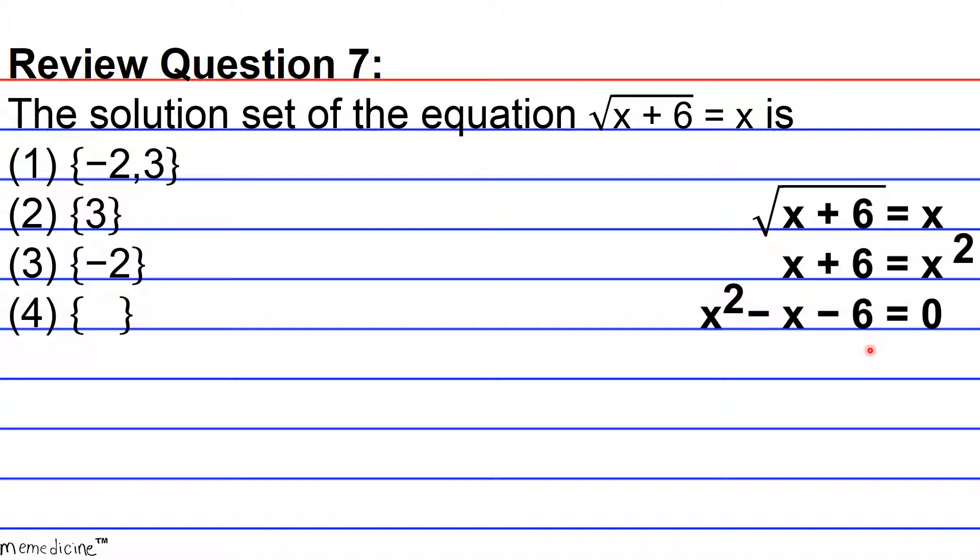So now we're going to do the reverse FOIL method and factor this quadratic equation. We need two numbers that when we multiply them yield our C value. I'm guessing 2 and 3 but which one is negative and which one is positive is determined by the coefficient on the B value. The invisible coefficient here is negative 1.